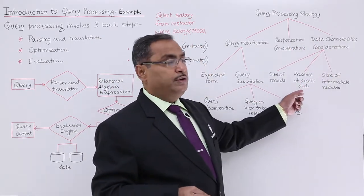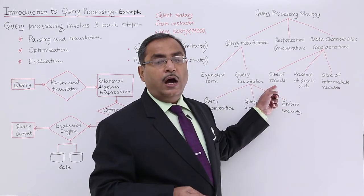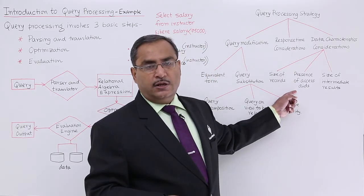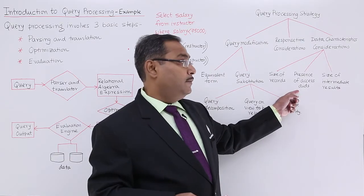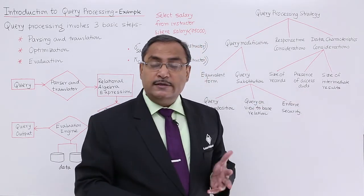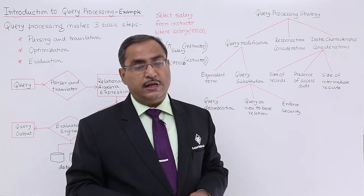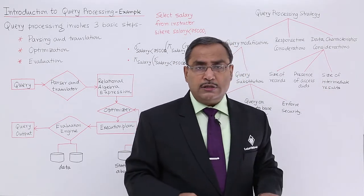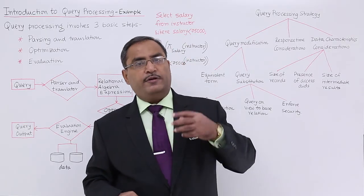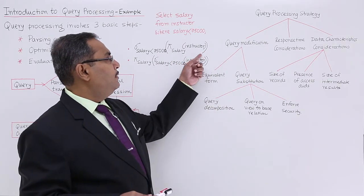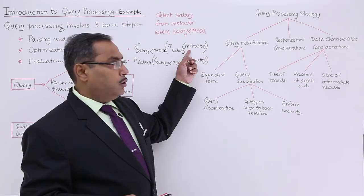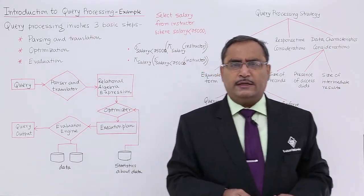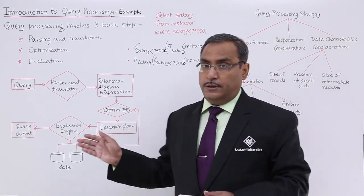Data characteristics considerations have three aspects. First, the size of the records — how many bytes of data you are dealing with per record. Second, the presence of access aids — what internal data structures are being used, such as B+ trees, ISAM (index sequential access method), or clustered record architecture. Third, the size of intermediate results — in the case of sub-queries, intermediate results are produced on which the outer query works. Here one expression produces an intermediate result of 5,000 records while the other produces 400 records. Keeping all these aspects in mind, a query is processed and optimized before being executed by the system.